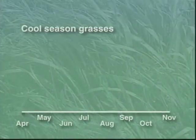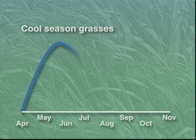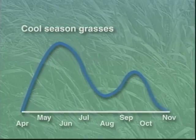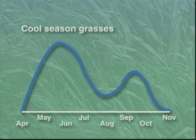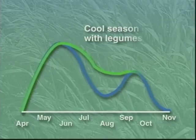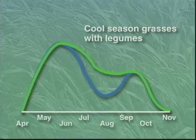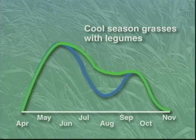Cool season pasture grasses begin their growth in early spring and produce forty to sixty percent of their seasonal growth before summer. They grow slowly through the warm summer months and again become productive during the cooler months of autumn. The presence of legumes in pastures with cool season grasses helps to improve the uniformity of pasture growth and feed value throughout the entire grazing season.